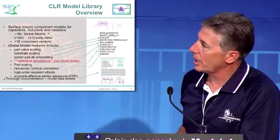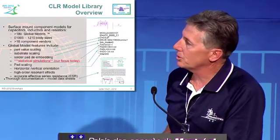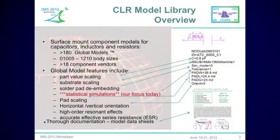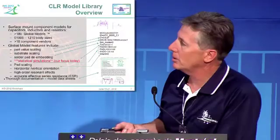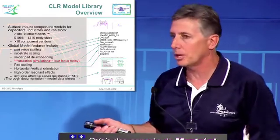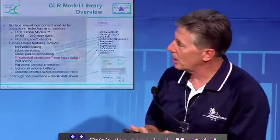Important for today's talk is the capability of the models to allow statistical simulations, so that you can put a statistical tolerance on the nominal part value. Other features include horizontal/vertical orientation, higher-order resonant effects captured out to the second higher-order resonance if present in measurements, and accurate ESR measurements. In your simulator, clicking Help in the parameter window pulls up a model information data sheet. The models are organized by body style — for example, one model captures a whole 0402 component family from ATC, allowing you to scale the part value and apply tolerances.